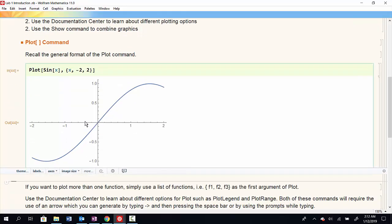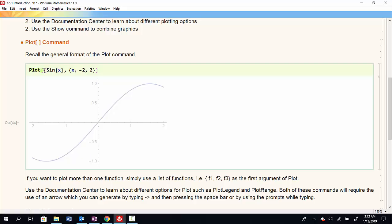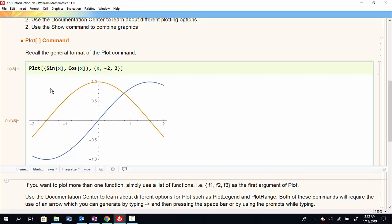Now if we want to plot more than one function, we can simply plot a list of functions. All lists in Mathematica have to be surrounded by curly brackets. So here we use curly brackets, enter our second function, and close our curly brackets. And now I should have the plot of more than one function.